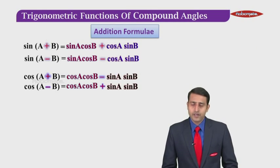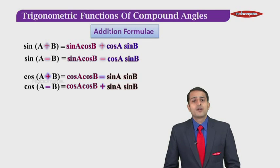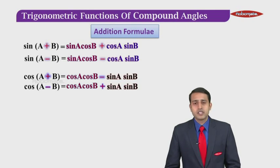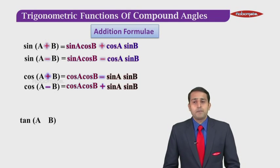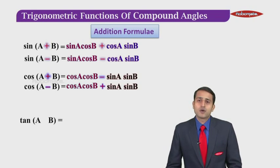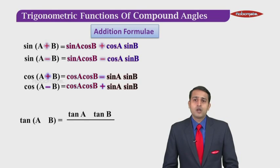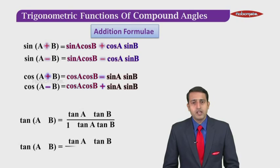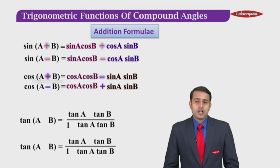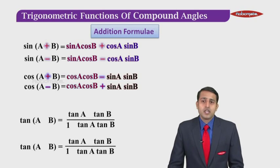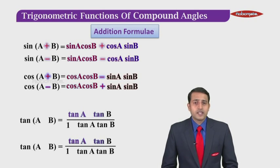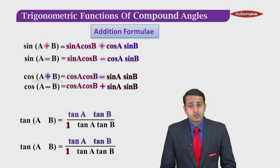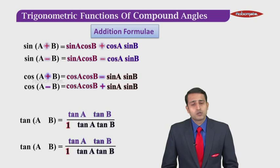We are done with sine and cosine. Now let us look at tangent. Tan of A plus B equals tan A plus tan B upon one minus tan A tan B. Likewise, tan of A minus B has the same structure. If you observe, tan A, tan B, one, and tan A tan B are all common to both formulas. The two formulas are almost the same — so how do we distinguish between the two?